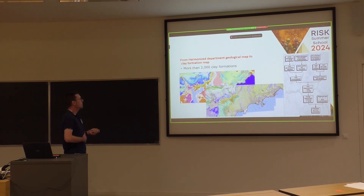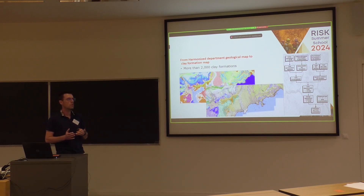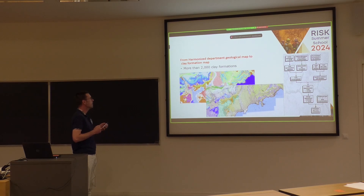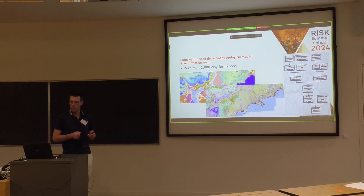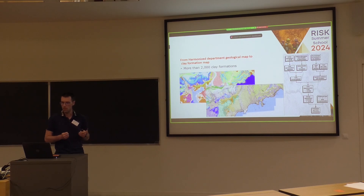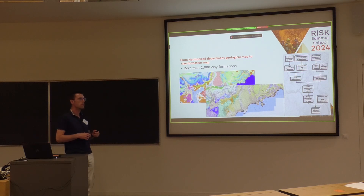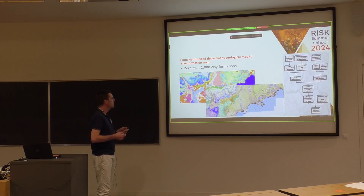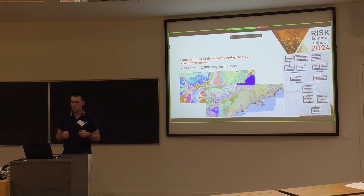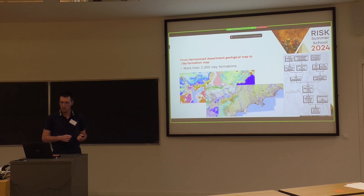The second step is to identify on these maps the geological formations — specifically clay and marl formations — that could give rise to shrinking and swelling phenomena. Geologists then selected or rejected each geological formation on this basis.